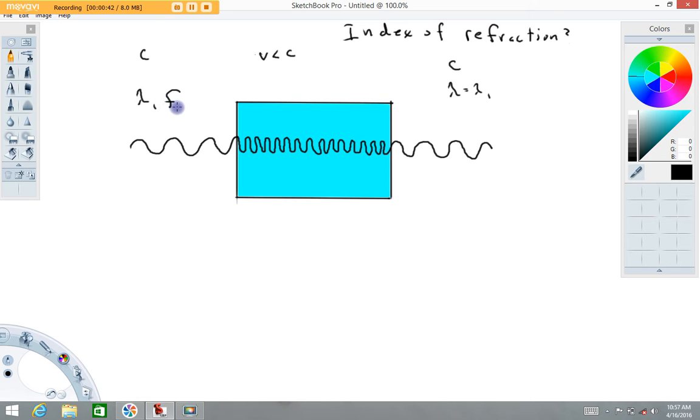It's going to have a certain frequency that I'm going to call f1 and it's traveling at a speed c, which is the speed of light, 3 times 10 to the eighth meter per second. This picture represents maybe a block of glass or something like that, some sort of material like glass, water, plastic that will allow transmission of light through it.